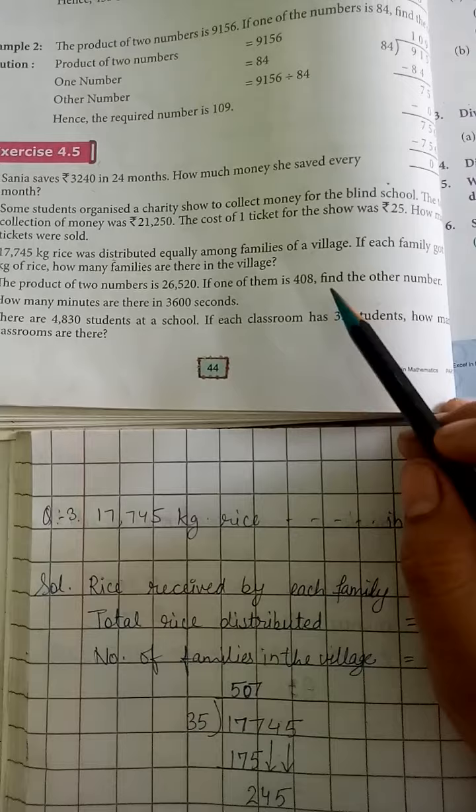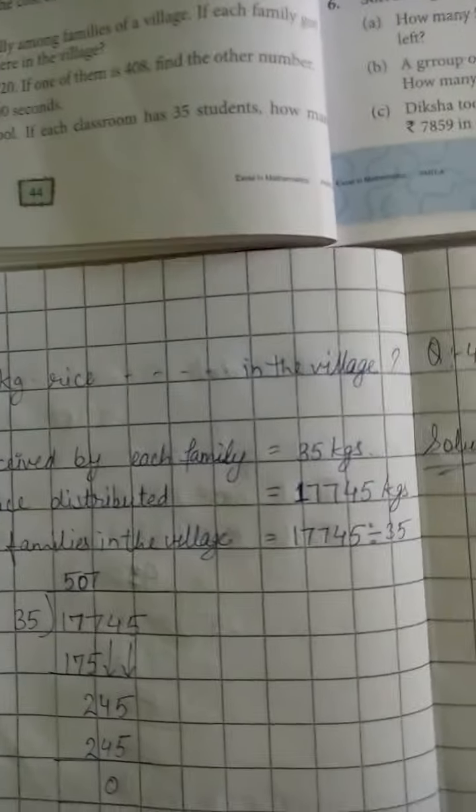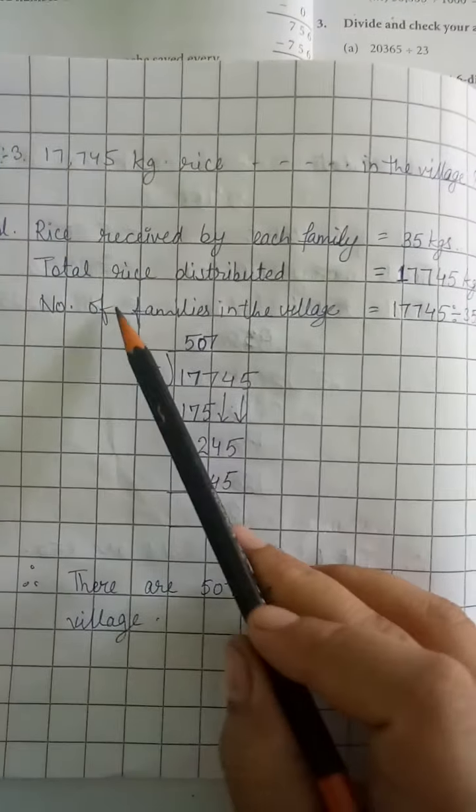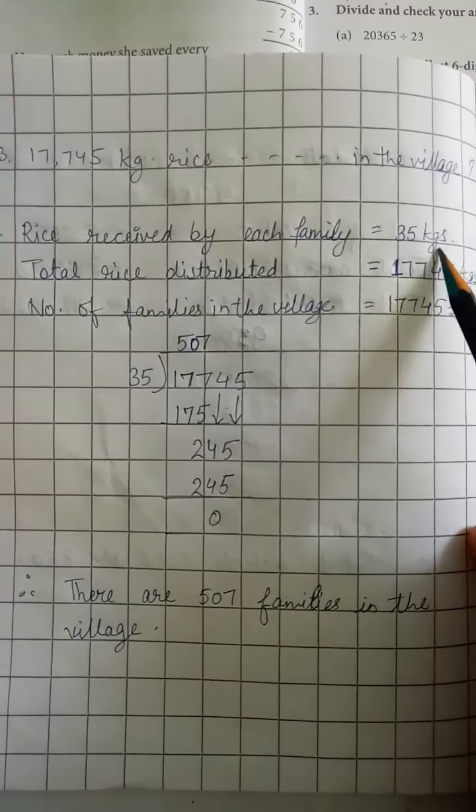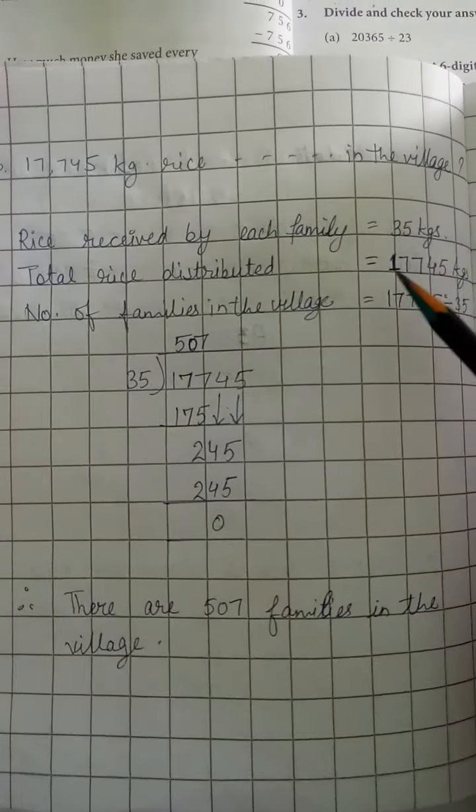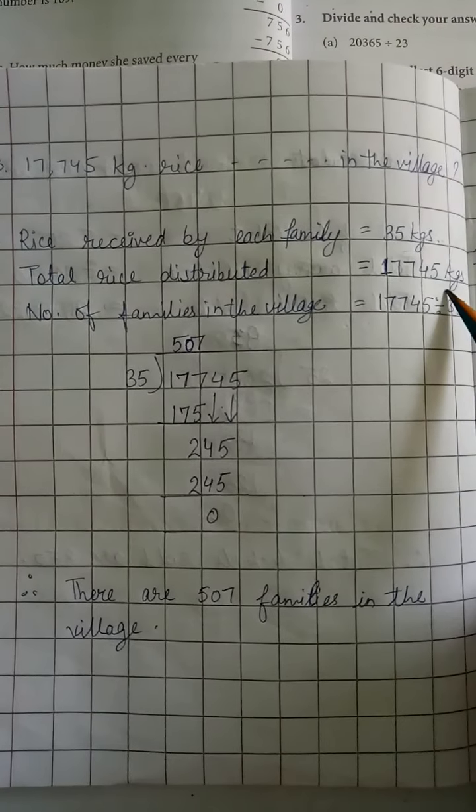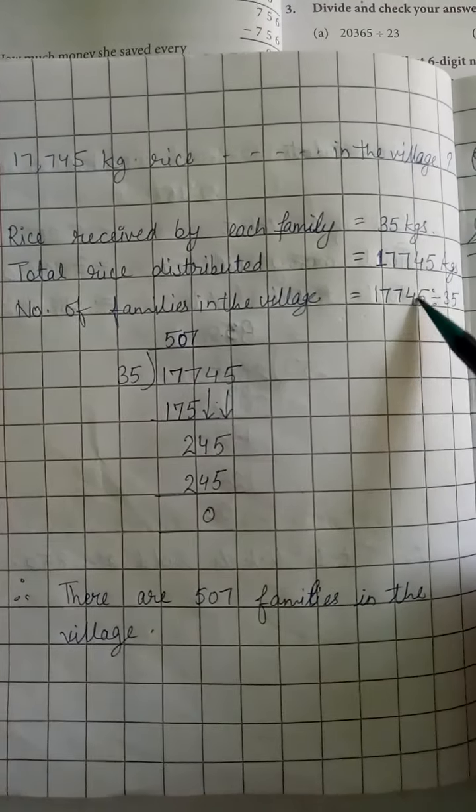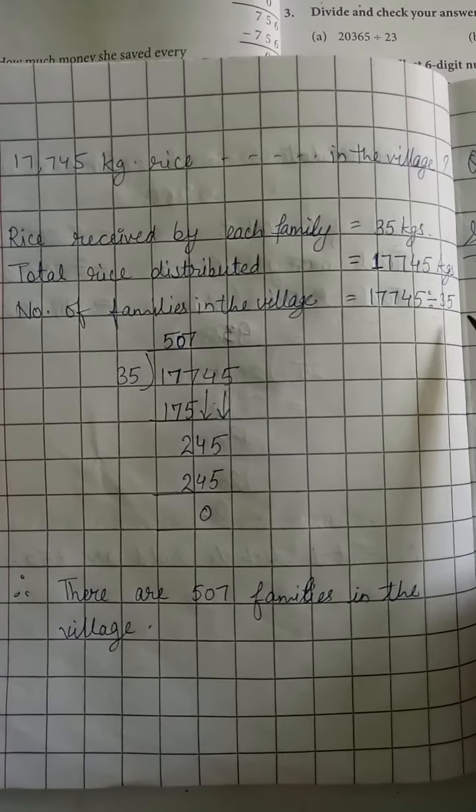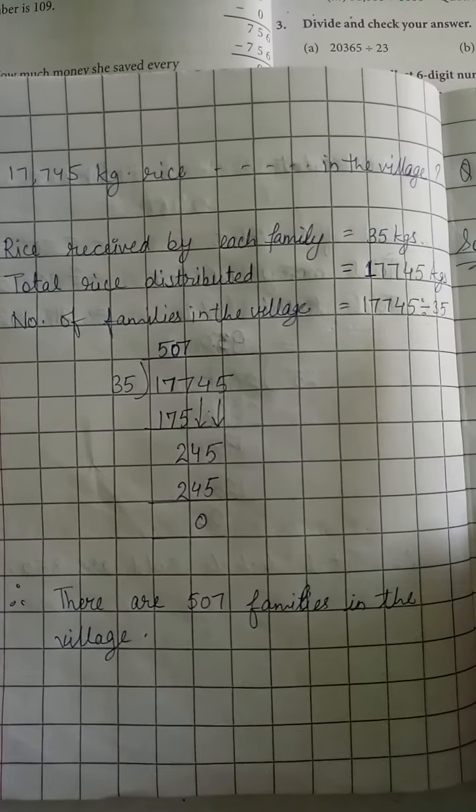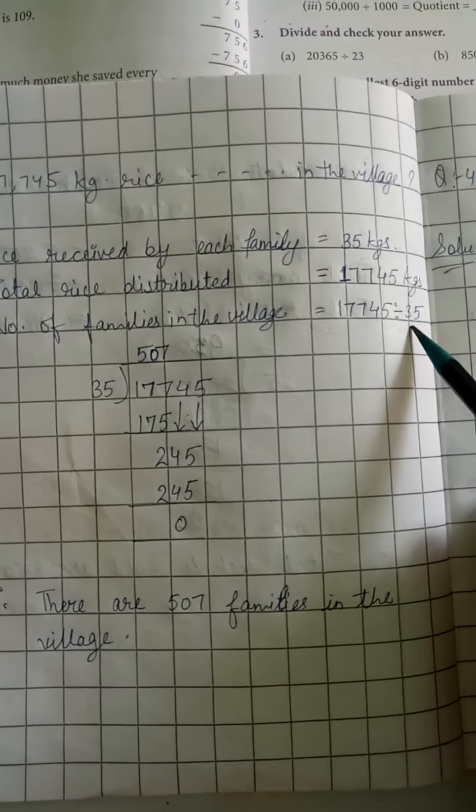How many families were there, we have to find out. Rice received by each family is 35 kg, total rice distributed is 17,745 kg. So number of families equals total rice distributed divided by rice received by each family.